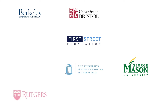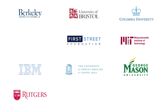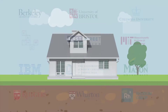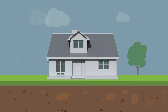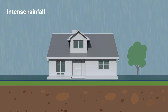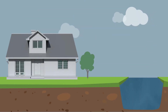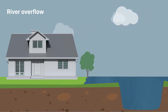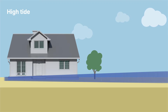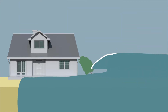The peer-reviewed model used by Flood Factor was created thanks to an unprecedented partnership of more than 80 world-renowned scientists, technologists, and analysts. The model allows Flood Factor to incorporate risk from all major types of flooding, including high intensity rainfall, overflowing rivers and streams, high tides, and coastal storm surge.